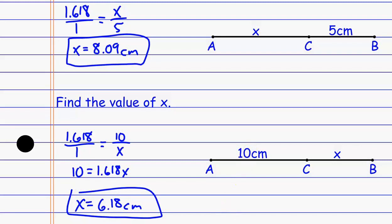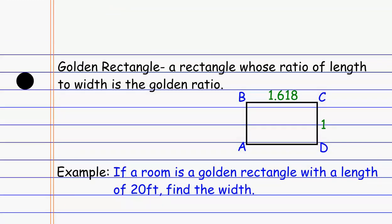The downside is we have to remember the golden ratio, unless you want to do the quadratic formula each time. Now we're going to talk about golden rectangles. A golden rectangle is basically when the length to the width gives us the golden ratio. If I compare the long side of the rectangle to the short side and get a ratio of 1.618 to 1, I'm dealing with a golden rectangle.